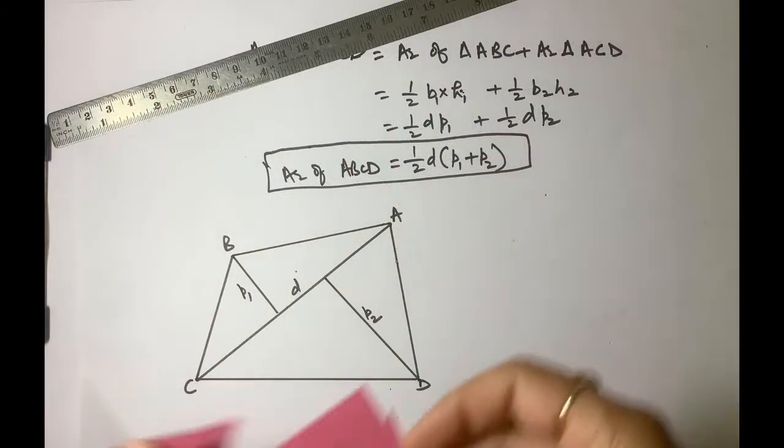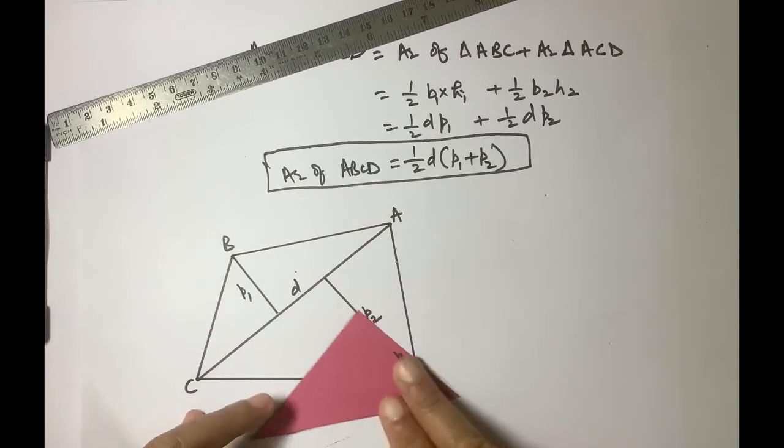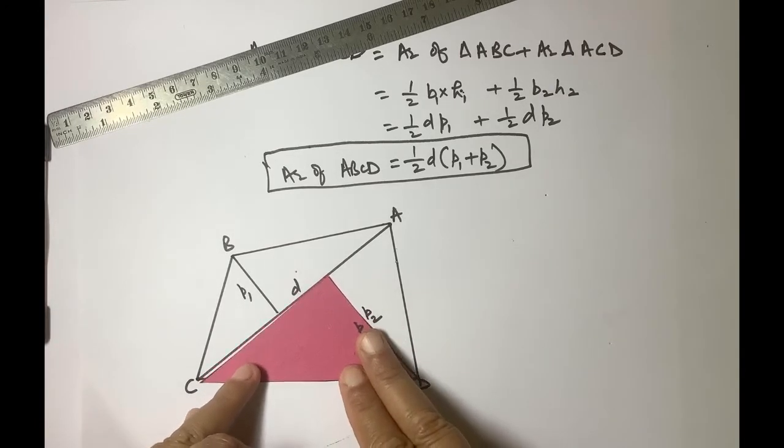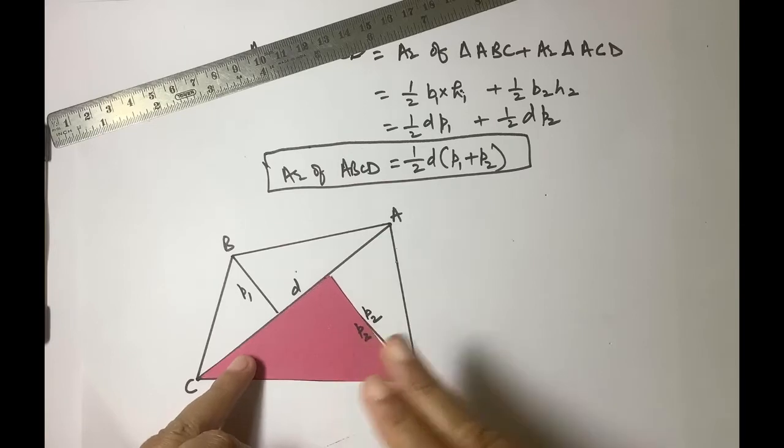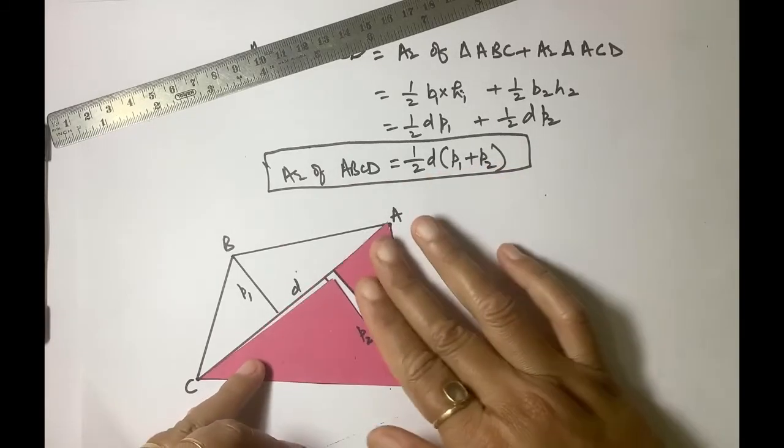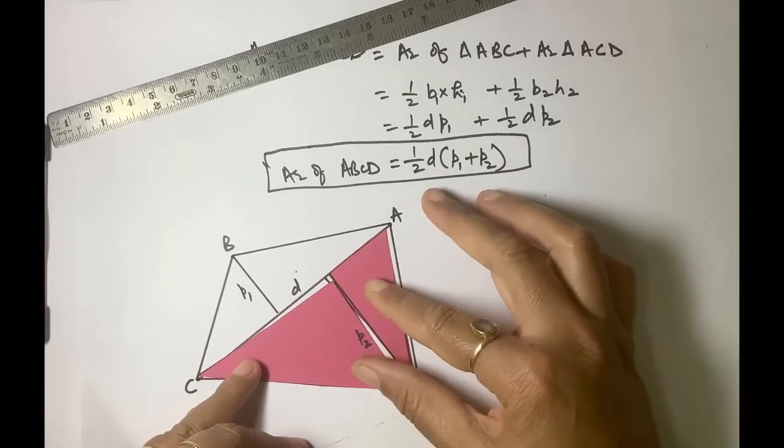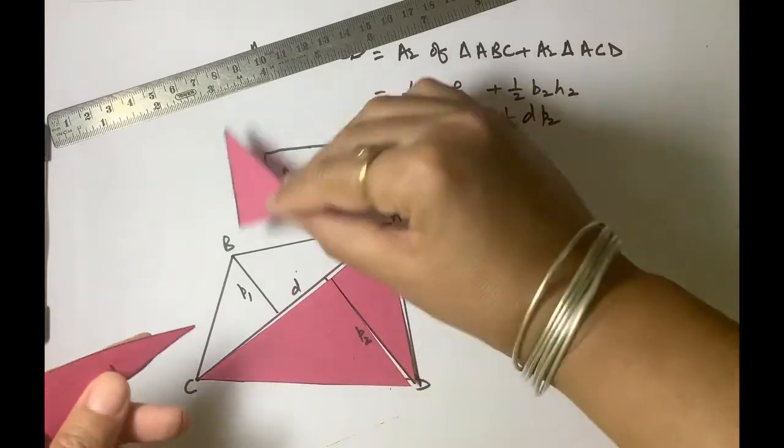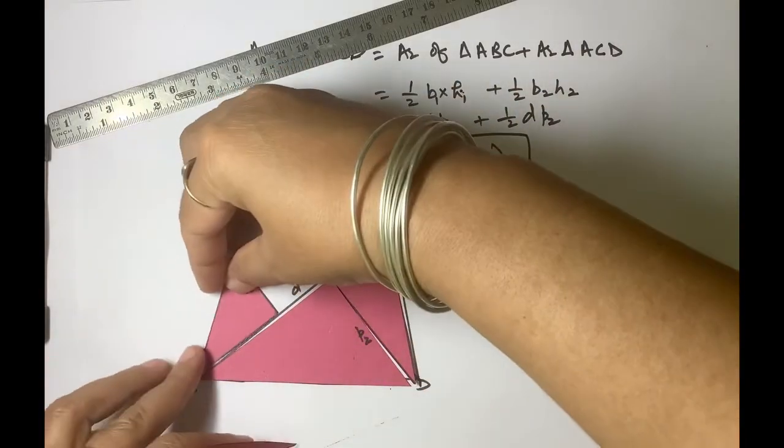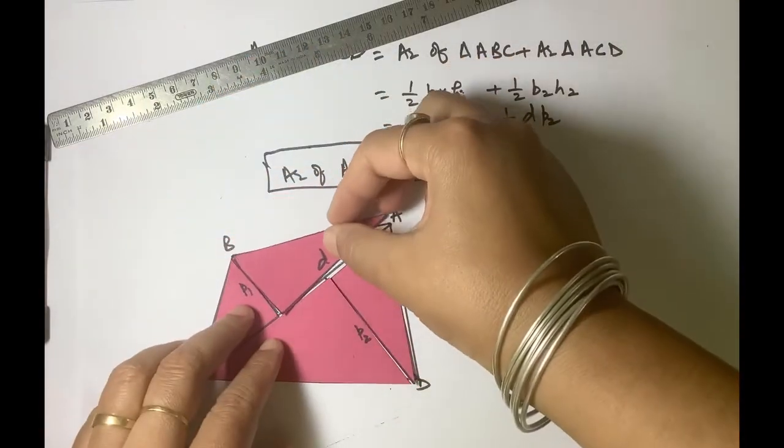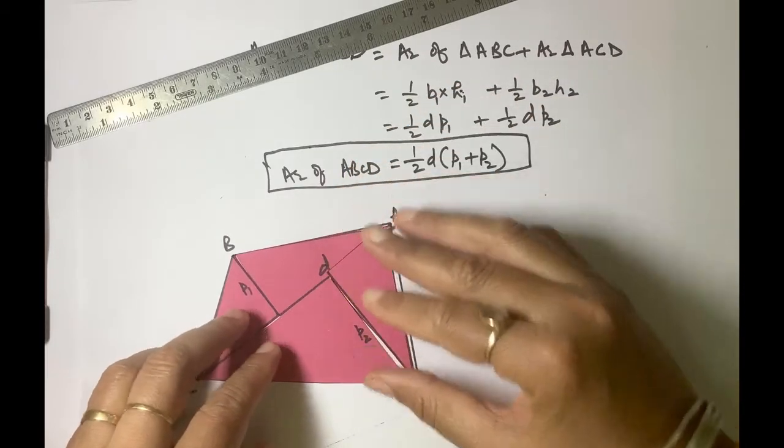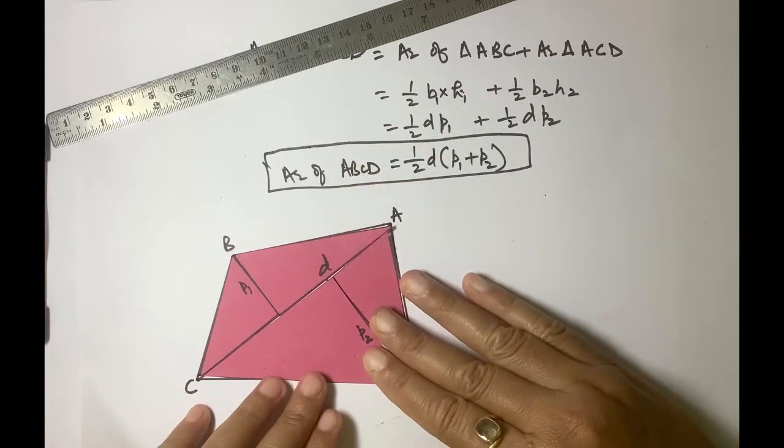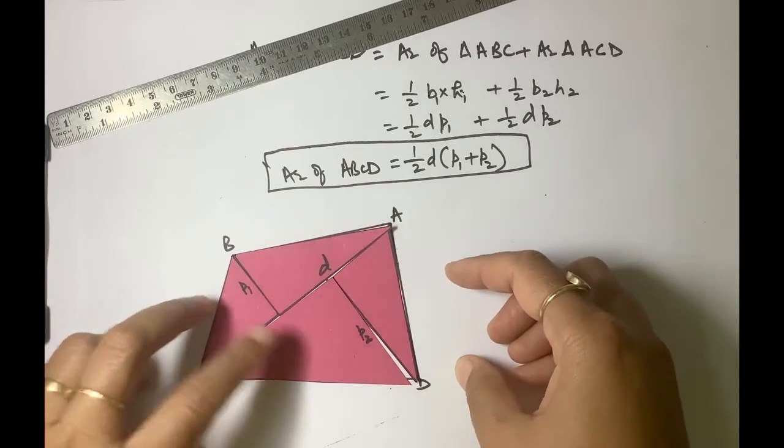Now if we adjust these pieces on the quadrilateral, we have drawn two quadrilaterals. This is exactly fit on this figure. That means we got two congruent quadrilaterals.